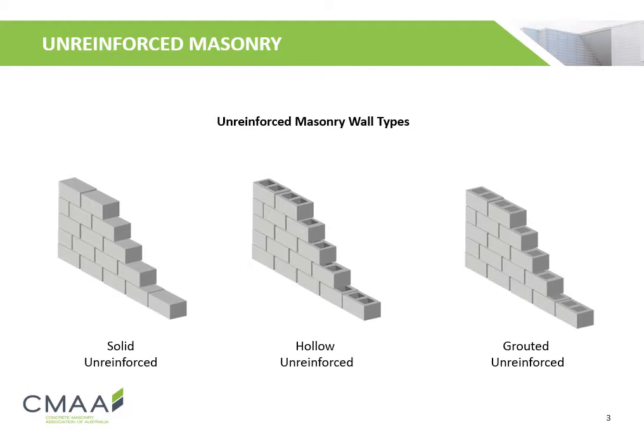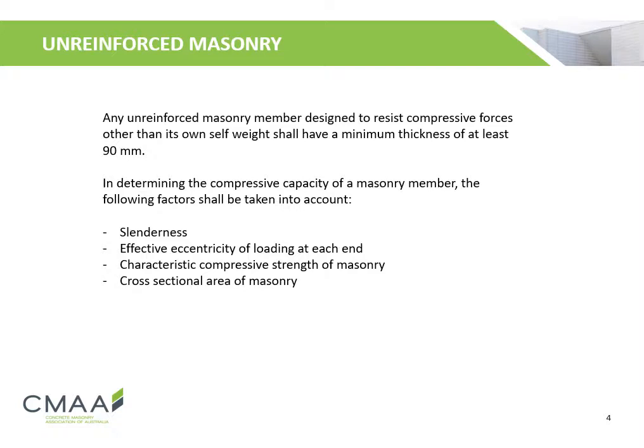We will now look at design considerations for unreinforced concrete masonry, which include solid, hollow, or grouted unreinforced concrete masonry systems. Any unreinforced masonry member designed to resist compressive forces other than its own self-weight shall have a minimum thickness of at least 90 mm.